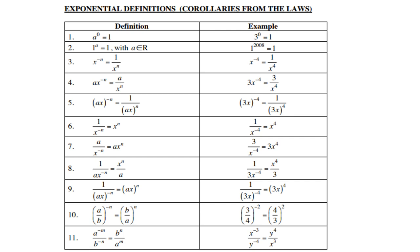Now let's look at exponential definitions — these are corollaries or deductions from the laws. The first one: a to the power 0 equals 1. Any term raised to the power 0 is always 1. For example, 3 to the power 0 is 1.